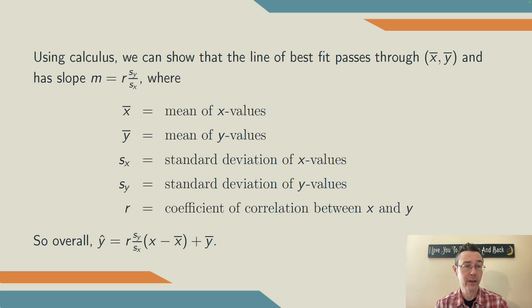The least squares regression line always has a slope given by r times sy over sx, where r is the coefficient of correlation between the variables, and sy and sx are the sample standard deviations of y and x, respectively.